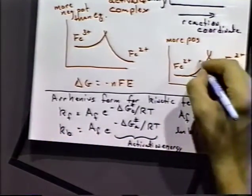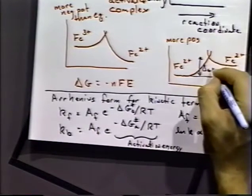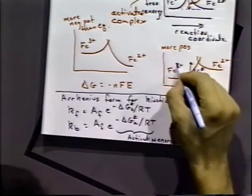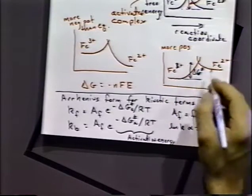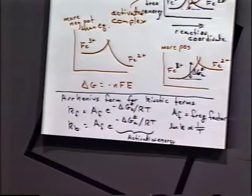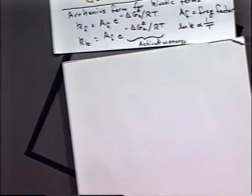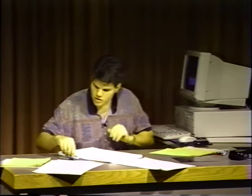We've taken the energy needed to get over the barrier — that's delta G double-dagger for the reduction process, 3+ to 2+, so that's delta G_C in that particular case. However, we can't just leave it there, because we can't measure the activation energy delta G directly. To understand the kinetics we actually have to do it experimentally. So we need some other way of looking at the system.